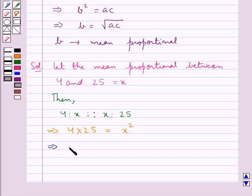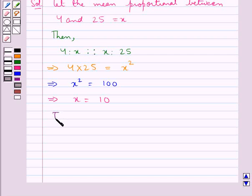So we have x squared is equal to 100, which means that x is equal to 10. Therefore, the mean proportional between 4 and 25 is 10.